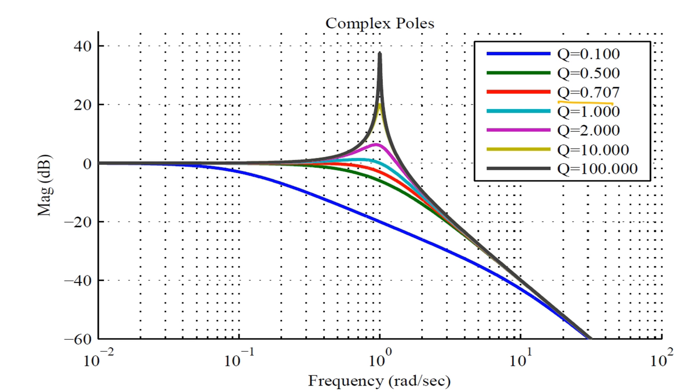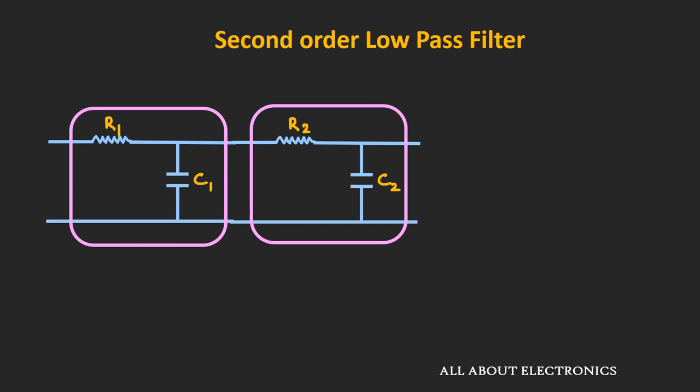Simply cascading two first order RC low pass filters cannot achieve a second order Butterworth filter, because the Butterworth design requires a higher value of Q (0.707). That is only possible when we have some positive feedback from the output side, which requires an active component in the circuit.